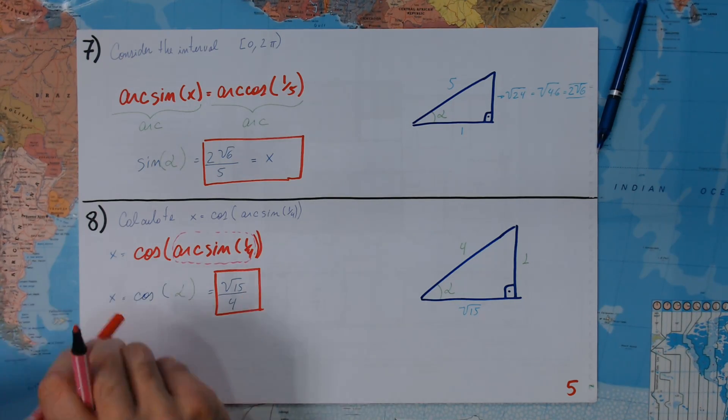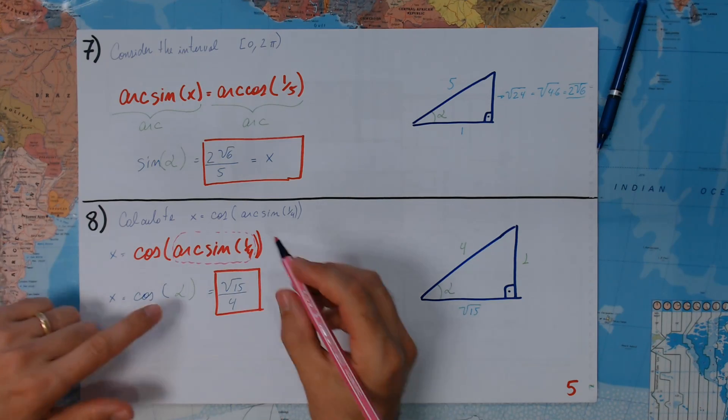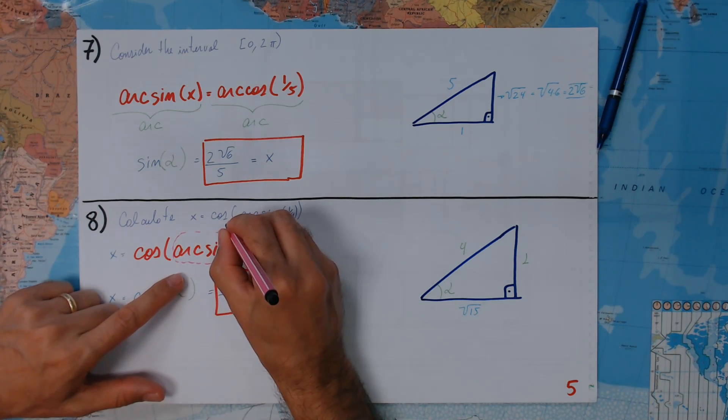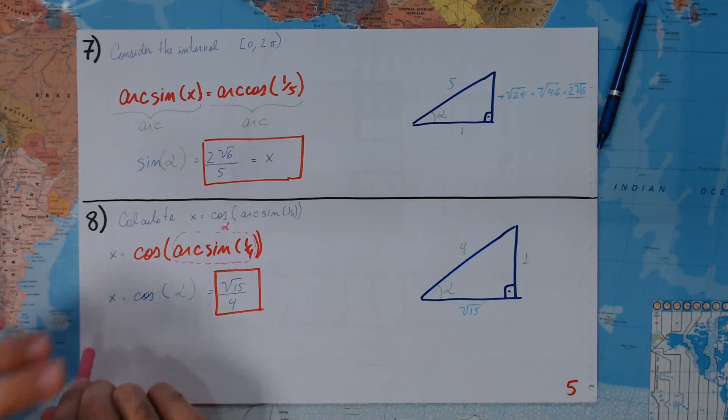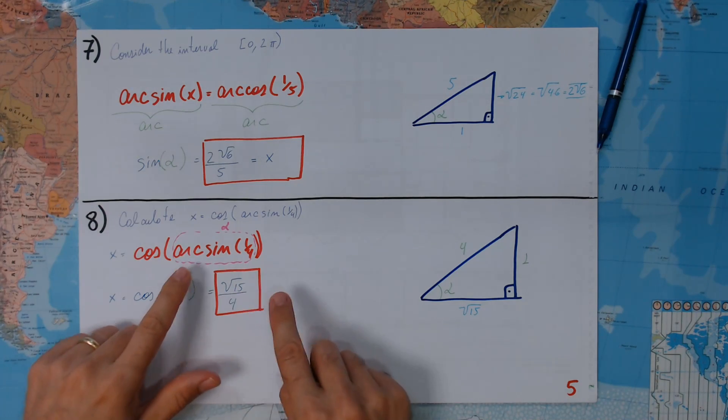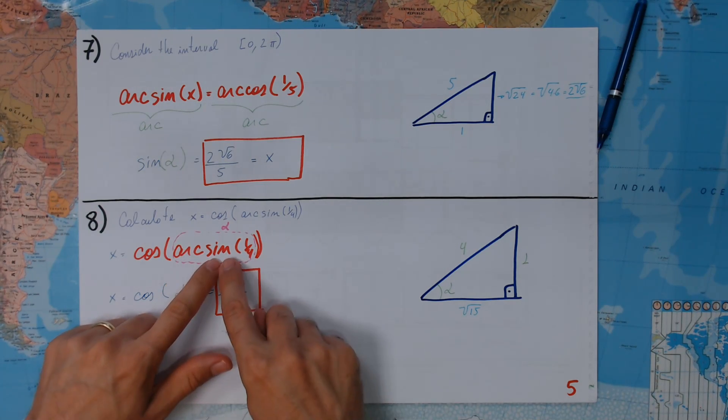Okay. Now, this is an angle, and I'm calling this angle alpha. And for that angle, for that arc, the sine is 1/4.